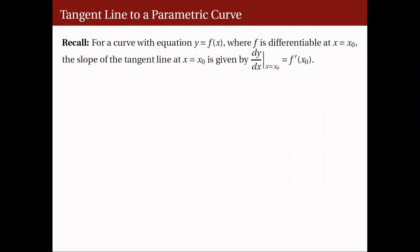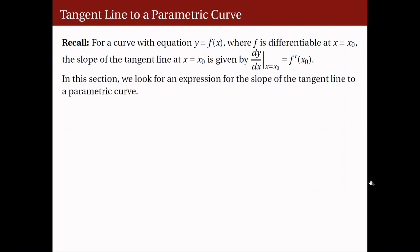Recall that given y equals f of x, or y is a function of x, where f is differentiable at x equals x-naught, then the slope of the tangent line at x equals x-naught is given by the derivative of y with respect to x evaluated at x equals x-naught, or simply f prime of x-naught. Here, we want to find an expression for the slope of the tangent line to a parametric curve.